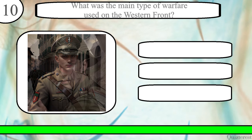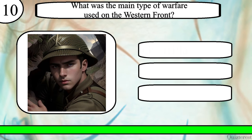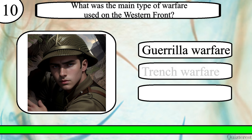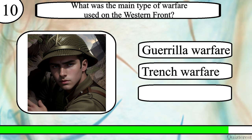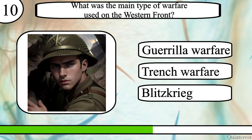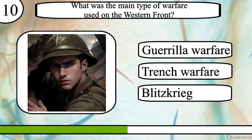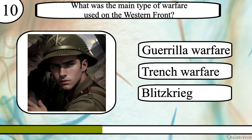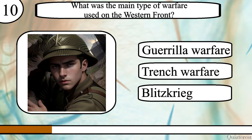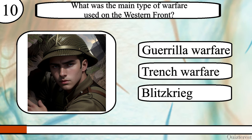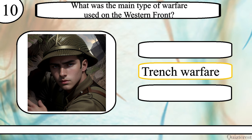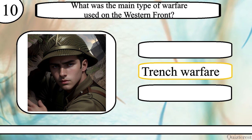Question 10. What was the main type of warfare used on the Western Front? Guerrilla warfare, trench warfare or blitzkrieg? The correct answer is trench warfare.